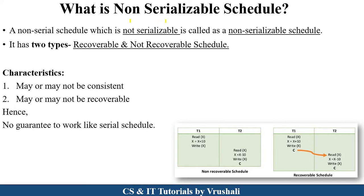What exactly is a non-serializable schedule? A serial schedule maintains consistency in the database, but a non-serial schedule does not maintain consistency. You can convert a non-serial schedule into serial schedule format — this is called serializability. But there are some cases where they can't be converted into serial schedule format, so this concept is called non-serializable schedule. This non-serializable schedule can be divided into two types: recoverable and non-recoverable. The properties of a non-serializable schedule are that it may or may not be consistent in the database, may or may not be recoverable when errors or failures occur, and doesn't store accurate information in the database. There is no guarantee it will work like a serial schedule.